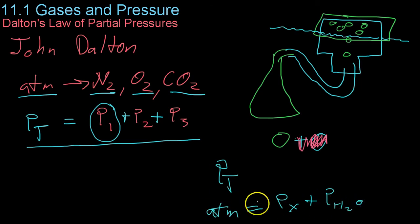And then what you would do is, just using some algebra, you would find the pressure of the unknown gas by subtracting the pressure of the water from the atmospheric pressure. And that is how they determine individual gas pressures by using Dalton's Law of Partial Pressures.